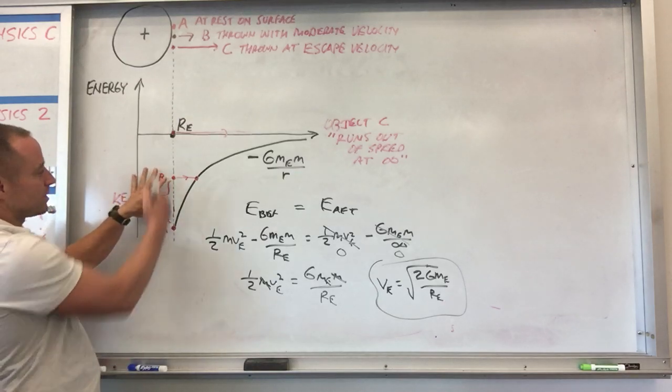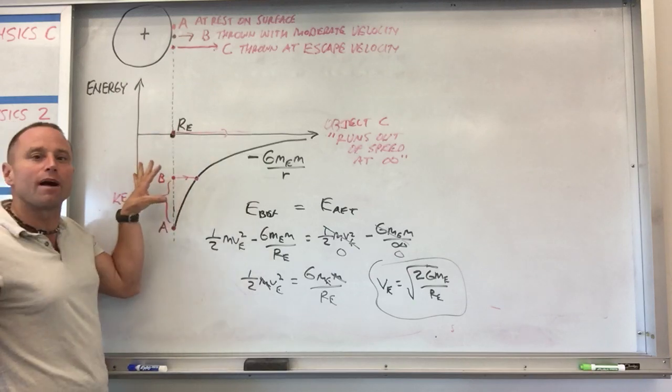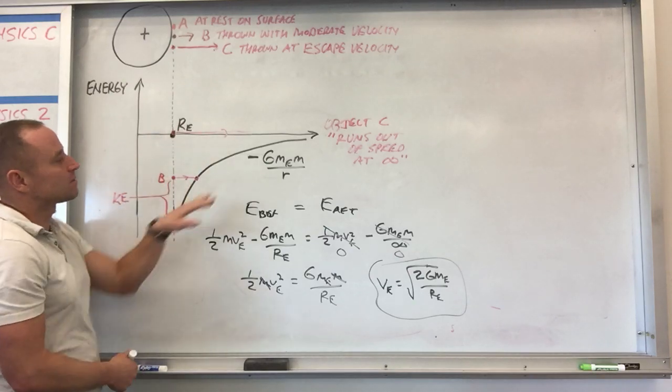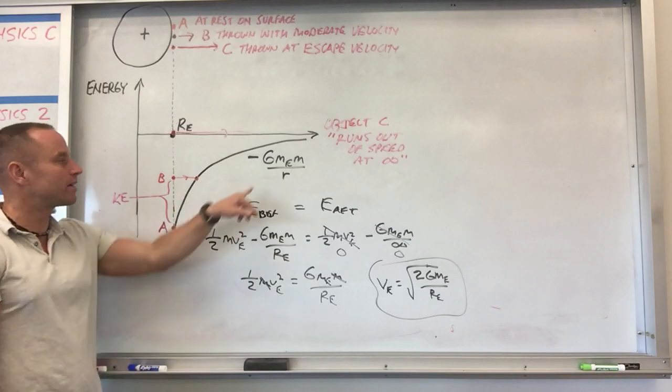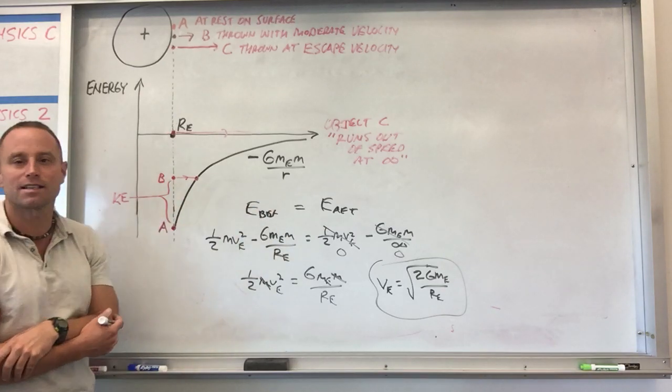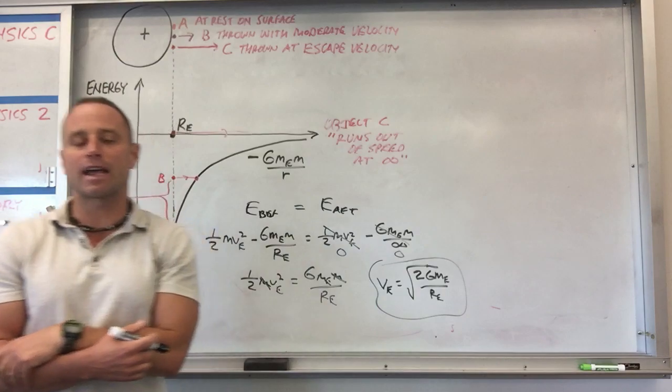So anything that's bound in an orbit is going to have a negative total energy. You know, so even something like object B, which is thrown pretty fast. Yeah, it's got plenty of kinetic energy, but its total energy is still negative. It's still bound in the Earth's orbit. So that's kind of how you use this thing. Again, just like any other potential energy, just throw it in there. Don't let it bother you too much that the negative sign is in front.